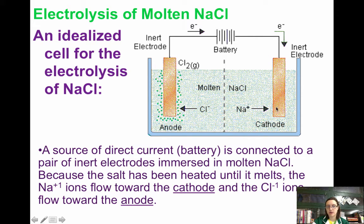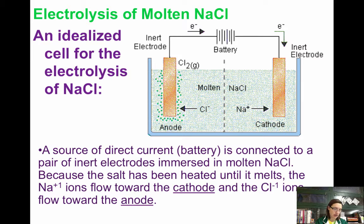Because the salt has been heated and melted, you now have ions in the solution. You have Na⁺ going toward the cathode and Cl⁻ going toward the anode. Reduction still occurs at the cathode, oxidation still occurs at the anode. When there is no water present and you have a pure molten ionic compound, the cation will be reduced and the anion will be oxidized.